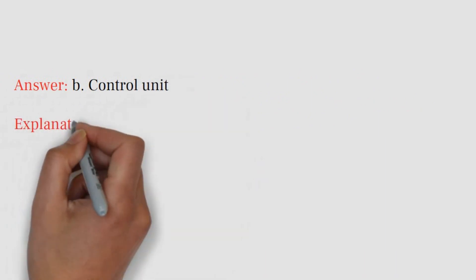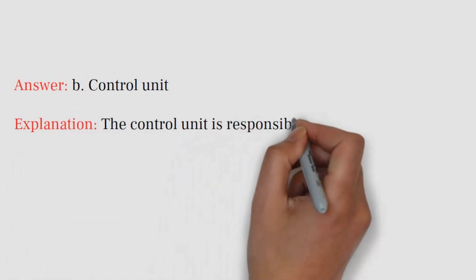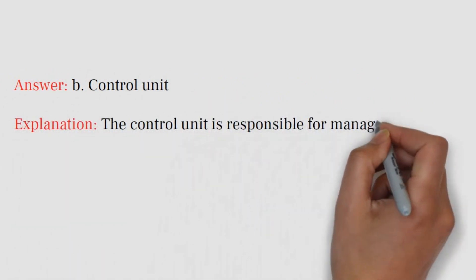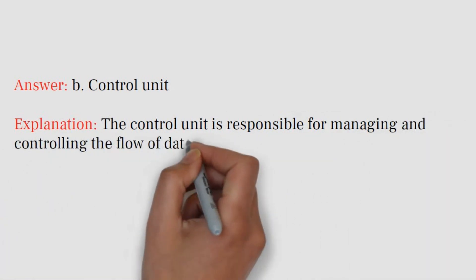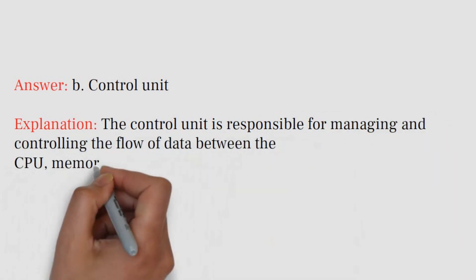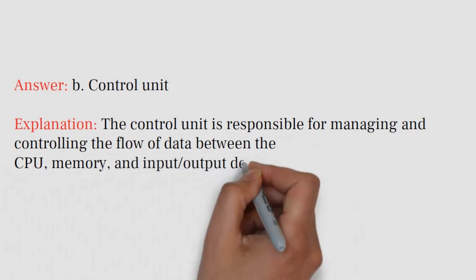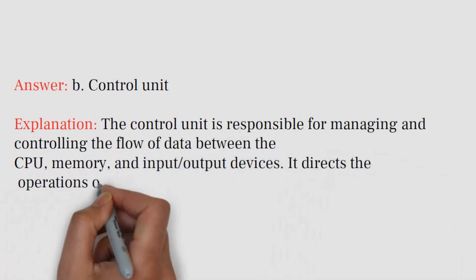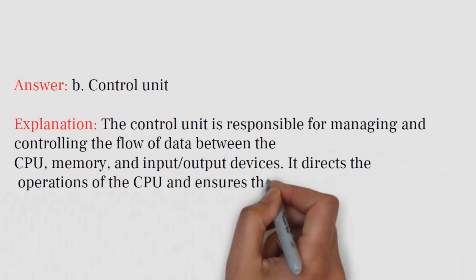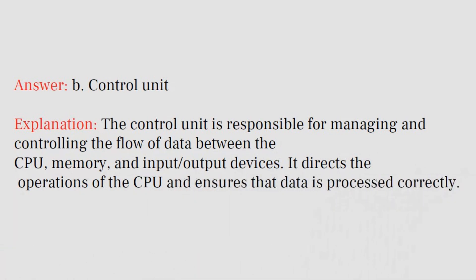Answer: B. Control unit. Explanation: The control unit is responsible for managing and controlling the flow of data between the CPU, memory, and input/output devices. It directs the operations of the CPU and ensures that data is processed correctly.